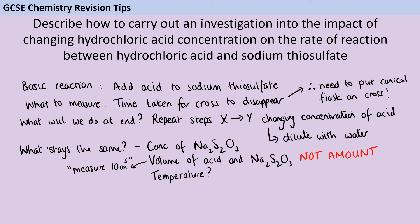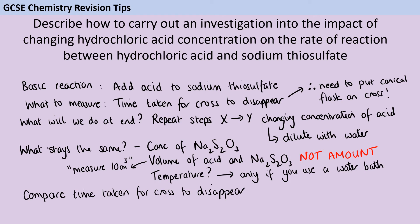You might include temperature as a control variable, but remember temperature only counts as a control variable if you are actively controlling it. Doing something at room temperature does not count as controlling it. If a question specifically asks you to name control variables and you want to mention temperature, you would need to talk about using a water bath or something that actively controls the temperature. The purpose of this investigation is to see the impact of concentration, so at the end you need to compare the time taken for the cross to disappear — the shorter the time, the faster the rate of reaction.